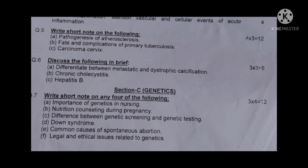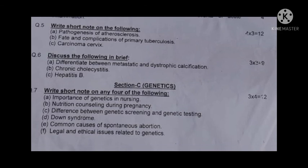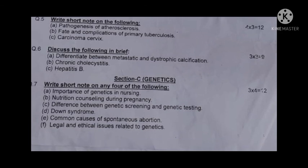Question six: discuss the following in brief — differentiate between dystrophic and metastatic calcification, (b) chronic cholestasis, and (c) hepatitis B. Section C is genetics.